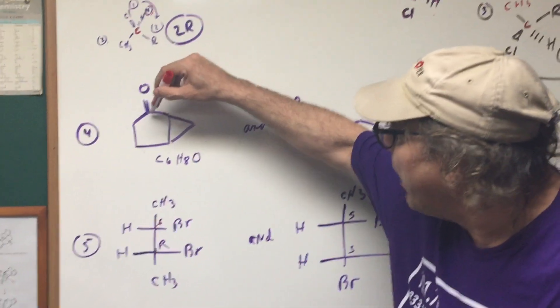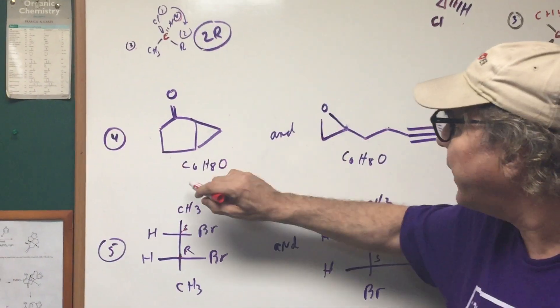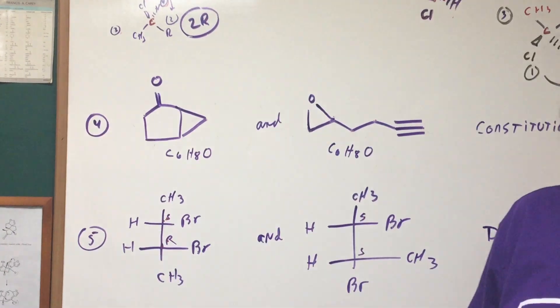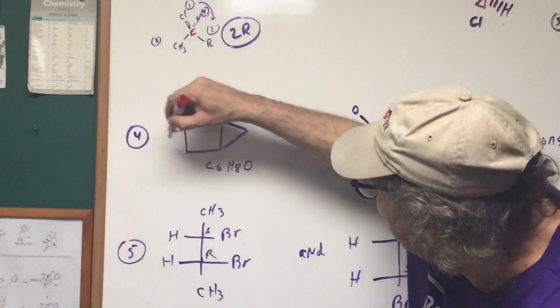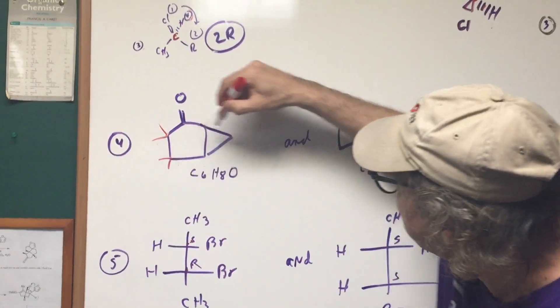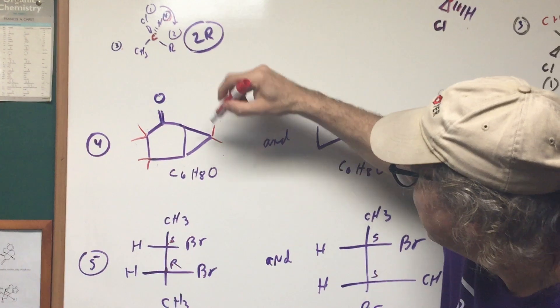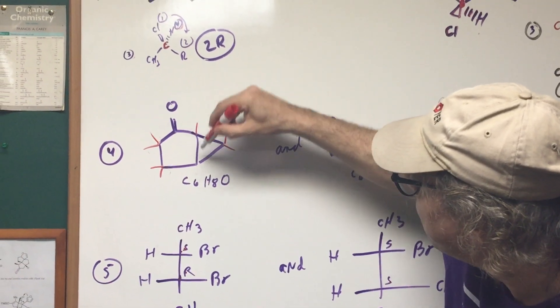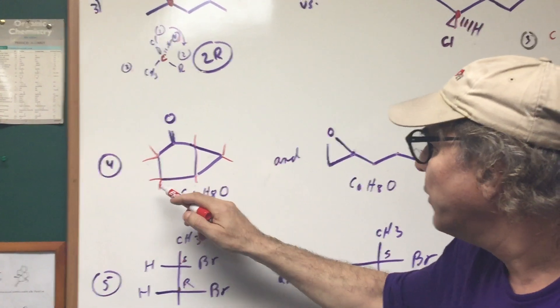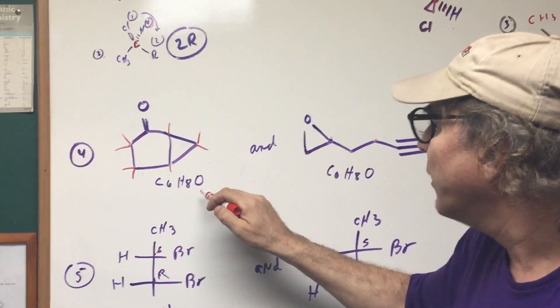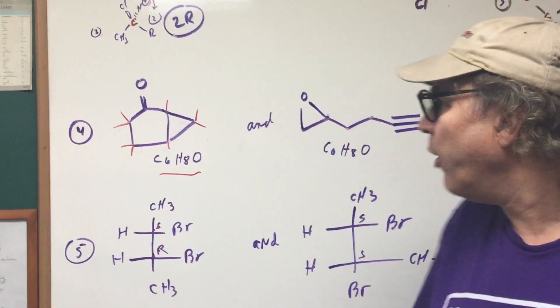If you counted carbons, 1, 2, 3, 4, 5, 6. Now to get the H's, what I like to do is put in what I call little cat whiskers. Any time I see a point, two H's. So I put the little cat whiskers in. And then this only gets one whisker. Because carbon has four bonds. So we have 2, 4, 6, 7, 8. So this will be a C6H8O.